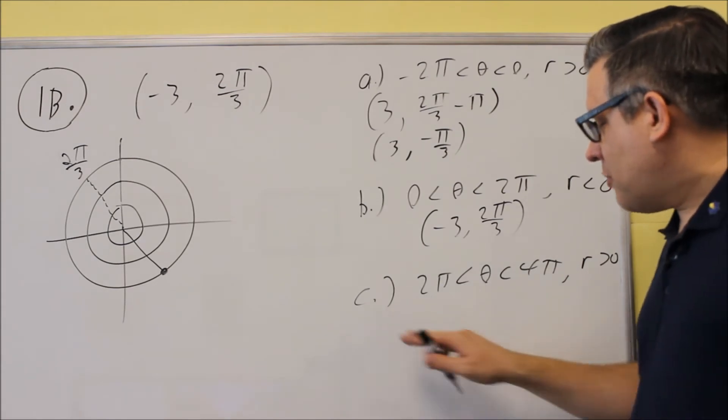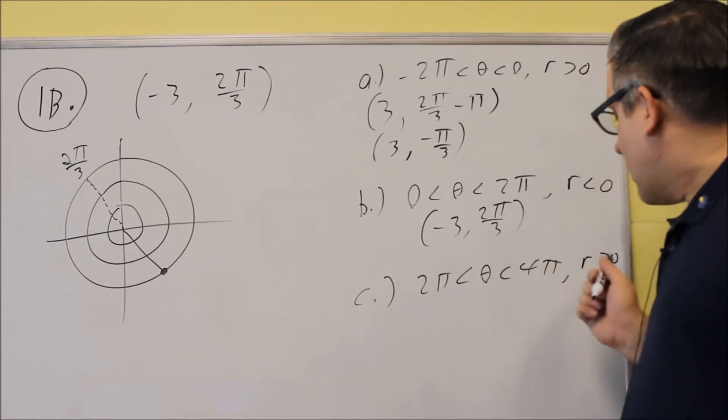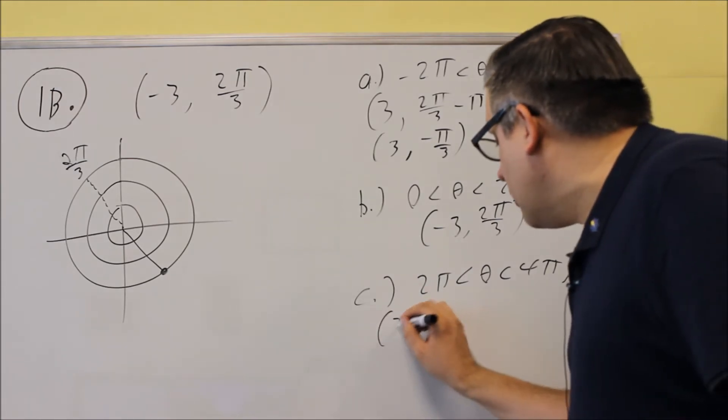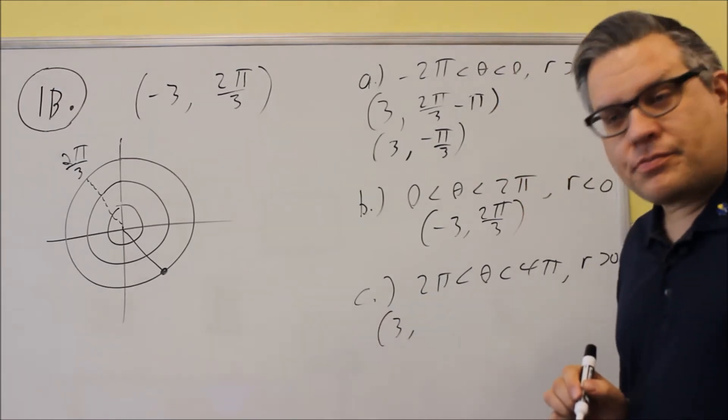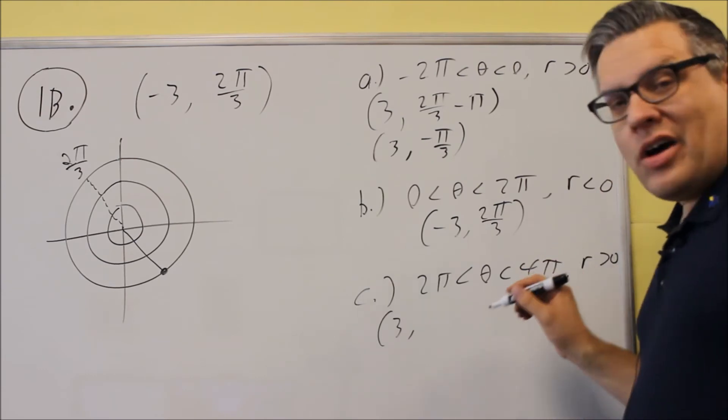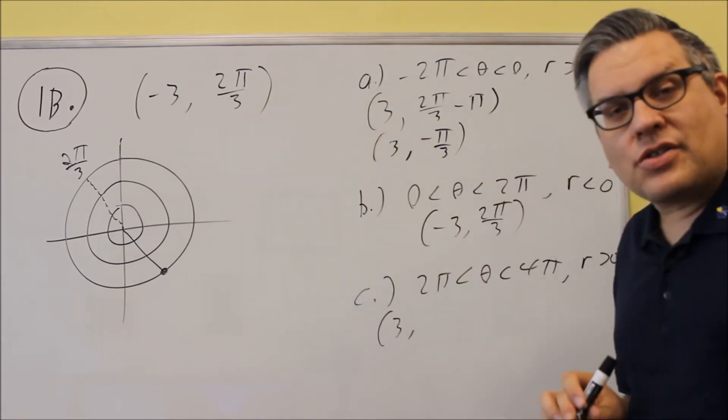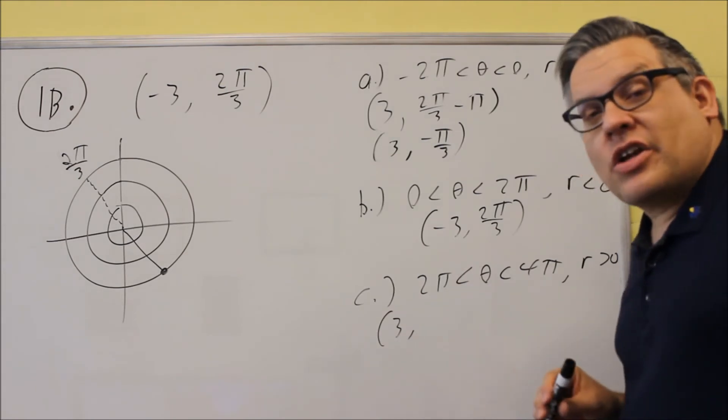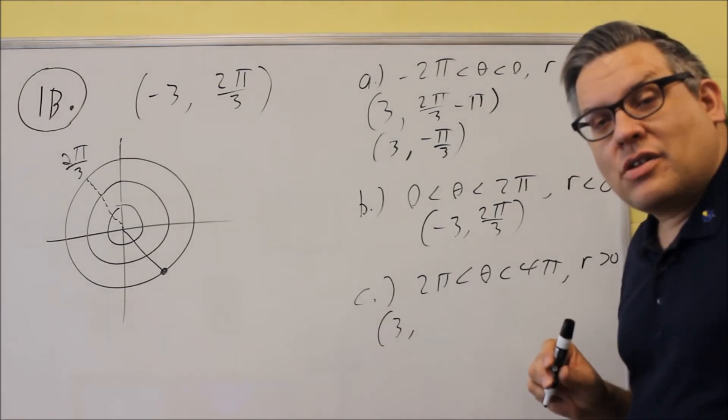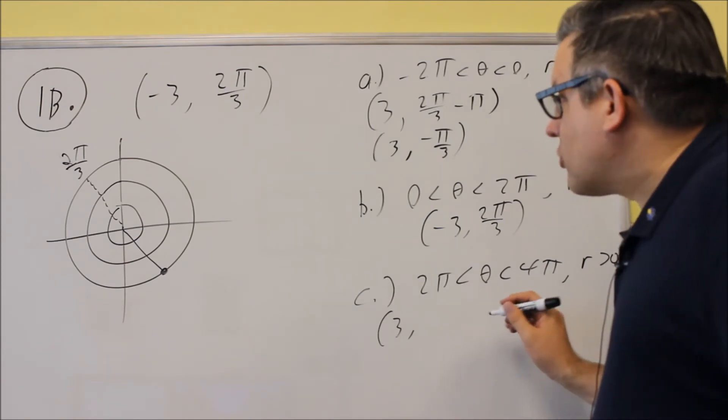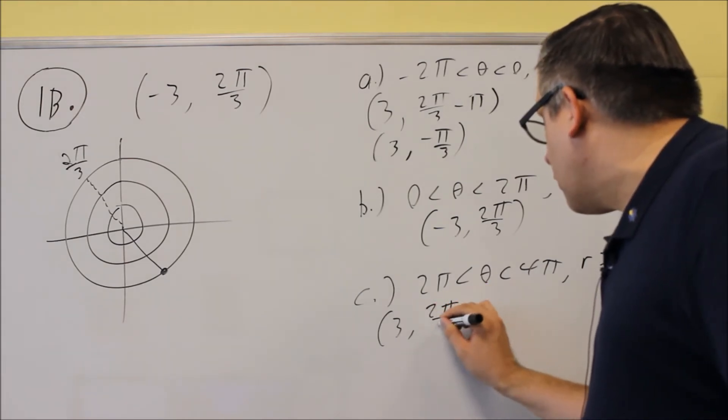So let's go to part c. Now part c, r has to be greater than 0, so we're going to do positive 3. And then, because I'm changing this from negative to positive, that means I need to choose to add or subtract π to this one. So the first step we're going to do is take 2π over 3,